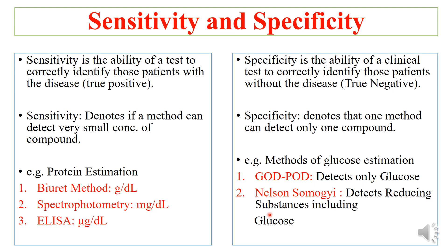On the other hand, the Nelson-Somogyi method is a chemical method that detects based on the reducing ability of glucose. So it is able to detect not only glucose but other reducing substances as well. It is not specific because not only glucose is reducing in our plasma — fructose can also be reducing in the sample, and if it is in urine, vitamin C can be reducing, along with many other substances having the reducing quality.